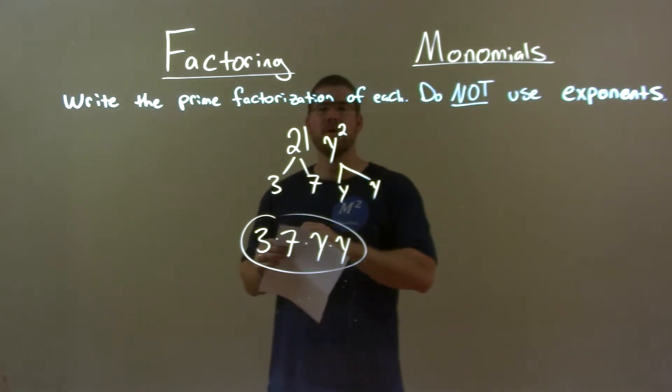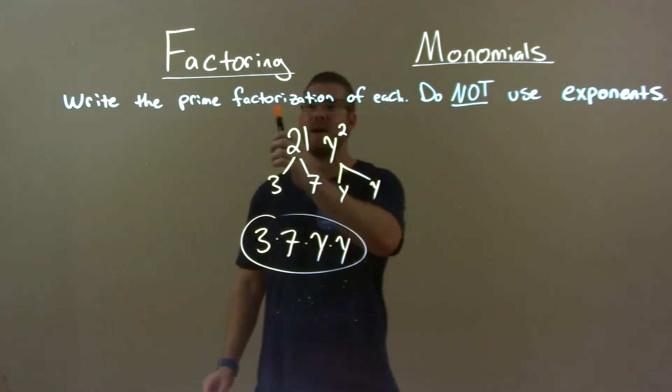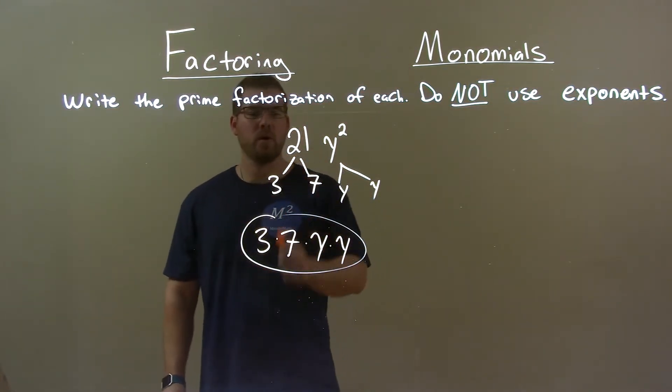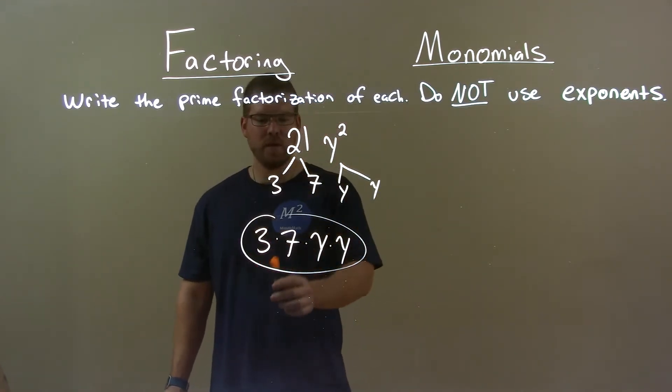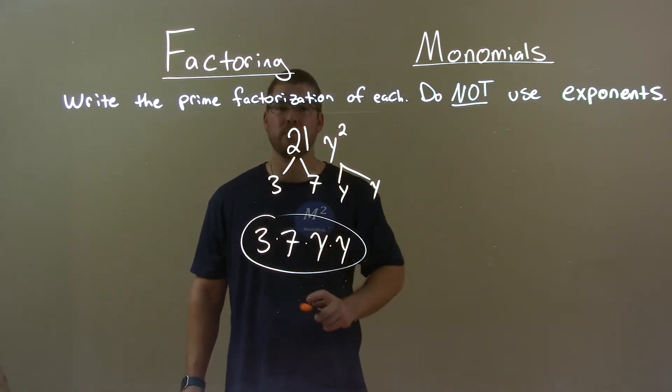So, quick recap. We're given 21y squared, and we find the prime factorization of it. 21 is 3 times 7. y squared is y times y. So, we have our answer, 3 times 7 times y times y.